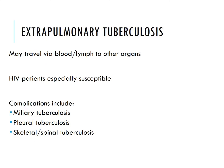Extra-pulmonary TB can travel via the bloodstream to other organs in immunocompromised patients. HIV patients are especially susceptible. Complications include miliary tuberculosis, pleural tuberculosis, and skeletal and spinal tuberculosis.